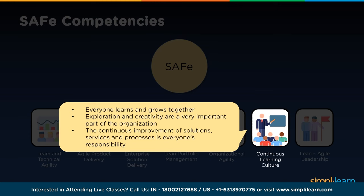Continuous learning culture means everyone learns and grows together. Exploration and creativity are a very important part of the organization — there should be innovation and intelligent risk-taking. Learning through failures is key: failure should lead towards inquiry, not towards blaming. Making the organization a learning organization requires continuous improvement of solutions, services, and processes as everyone's responsibility.